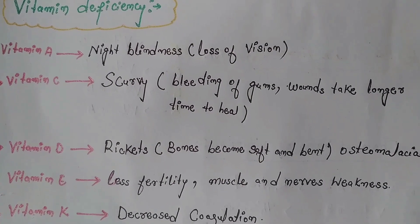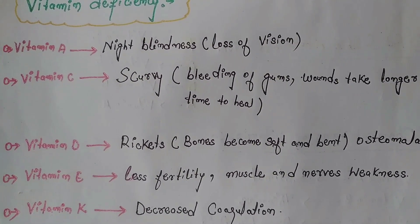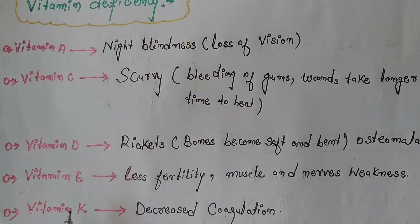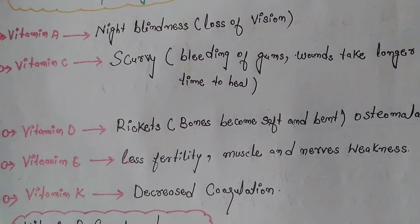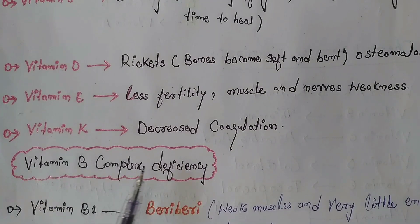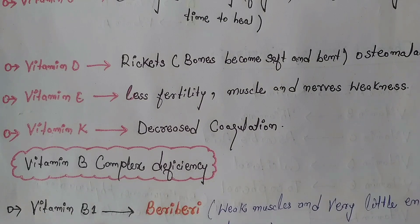Vitamin K deficiency decreases coagulation — meaning Vitamin K helps in coagulation of blood and in forming fibrin, the blood-clotting protein, so its deficiency leads to decreased coagulation. Vitamin B1 deficiency causes beri-beri, which means weak muscles and very little energy.